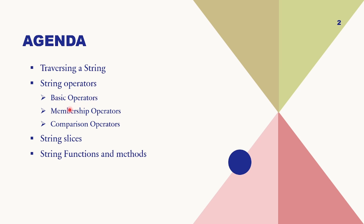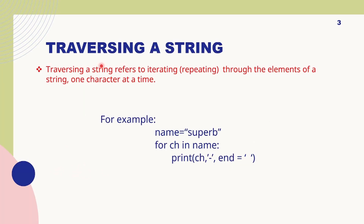We will also discuss slicing, just like you slice fruits at home, and then some string functions and methods at the last. First, traversing a string — it's a very easy process. Traversing a string refers to repeating through the elements of a string one character at a time. I have taken an example with the word 'super', and if I run the program 'for ch in name: print(ch)' with a dash and some blank space, see what happens.